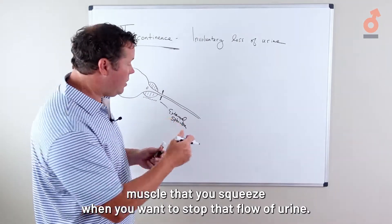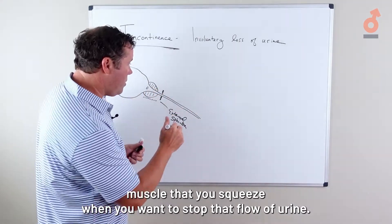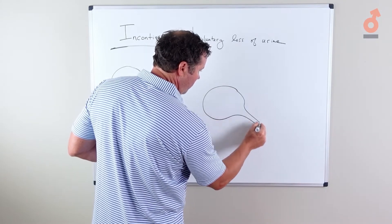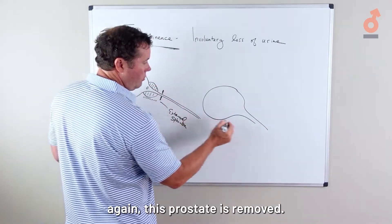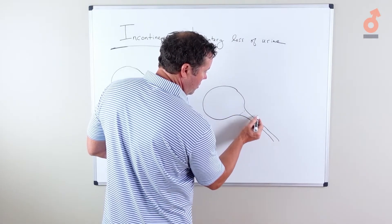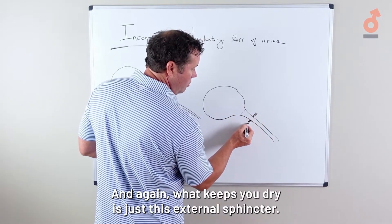So after surgery, this prostate is removed, this urethra is put back together with some sutures, and what keeps you dry is just this external sphincter.